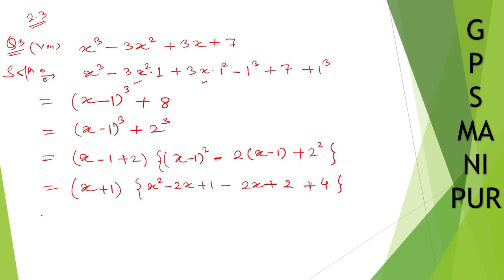Now x plus 1, x square, write down x square, 2x, 2x it is minus 4x, plus 1, 4, 5, 6, 7 so plus 7. So the answer is x square minus 4x plus 7. Thank you so much.